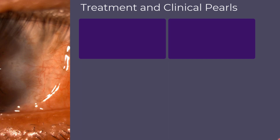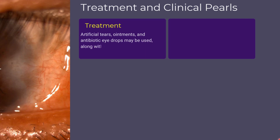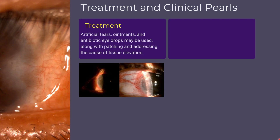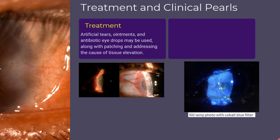For treatment, artificial tears and ointments can help keep the eye lubricated. In some cases, antibiotic eye drops may be used. Patching the affected eye for a day and addressing the causes of tissue elevation are also part of the treatment. Eye care professionals may use bandage contact lenses to treat corneal dellen.